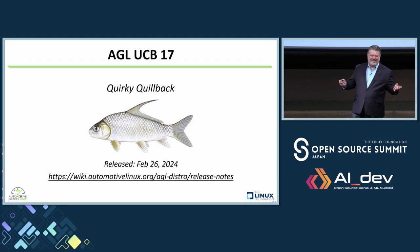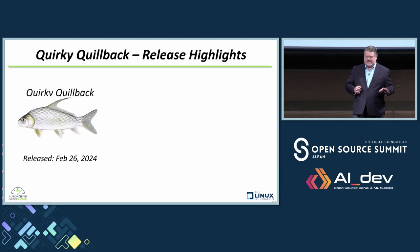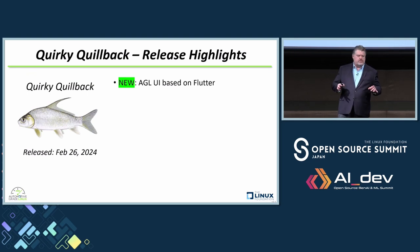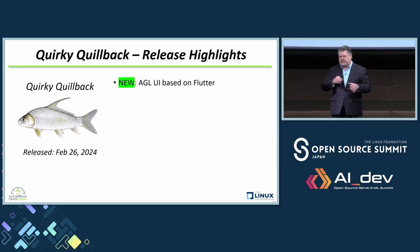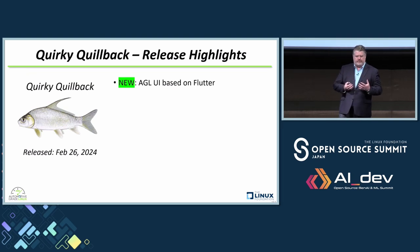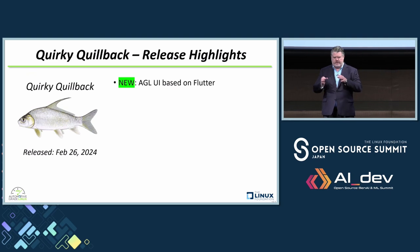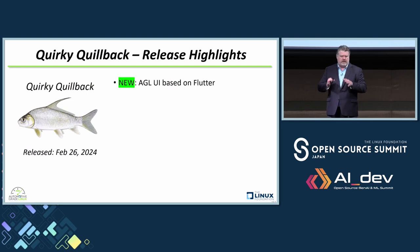We name our releases after fish — this is a fun thing we do, thanks to my colleague Walt Miner. Quirky Quillback was released in February. This was a major release, probably one of the most impactful we've had in the last couple of years. We introduced a brand new user interface based on Flutter. Flutter is an open source project originally developed by Google, made for tablets. Toyota decided to use Flutter in their production projects, modified it to make it automotive-specific, and contributed over a million lines of code back to AGL. AGL is now the home of embedded automotive Flutter, and we think this will become the de facto standard for the industry. We already know a few large OEMs in Europe are using Flutter in their R&D.